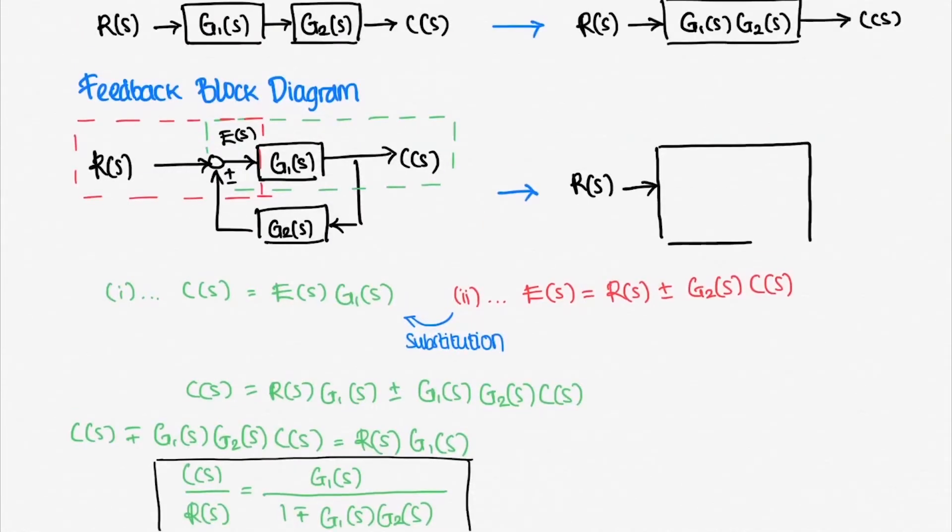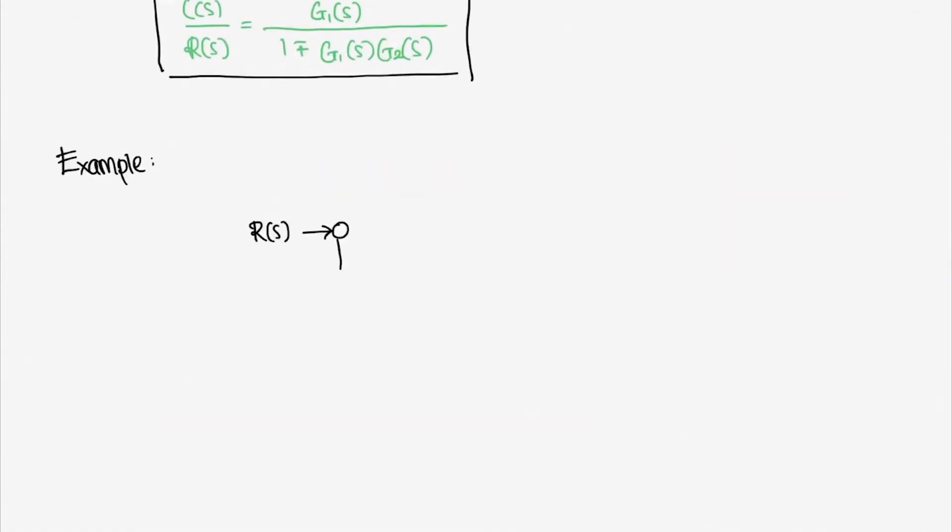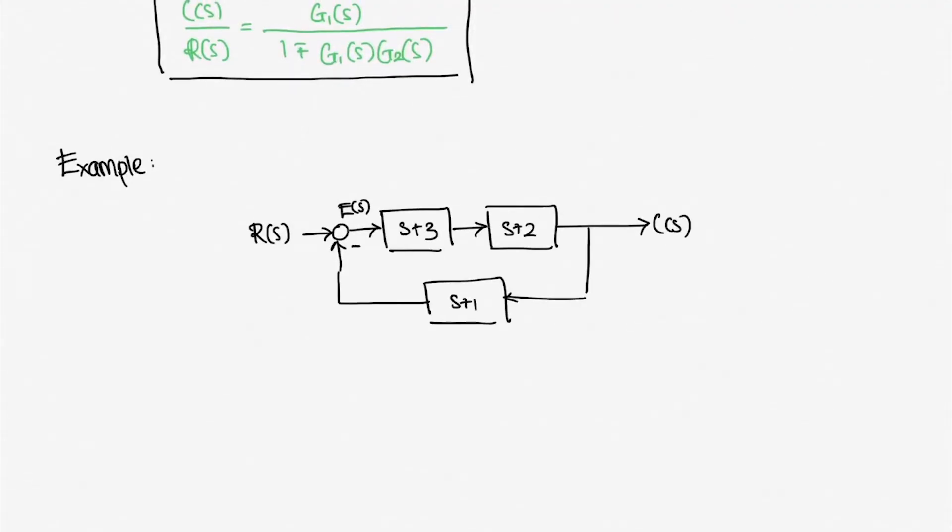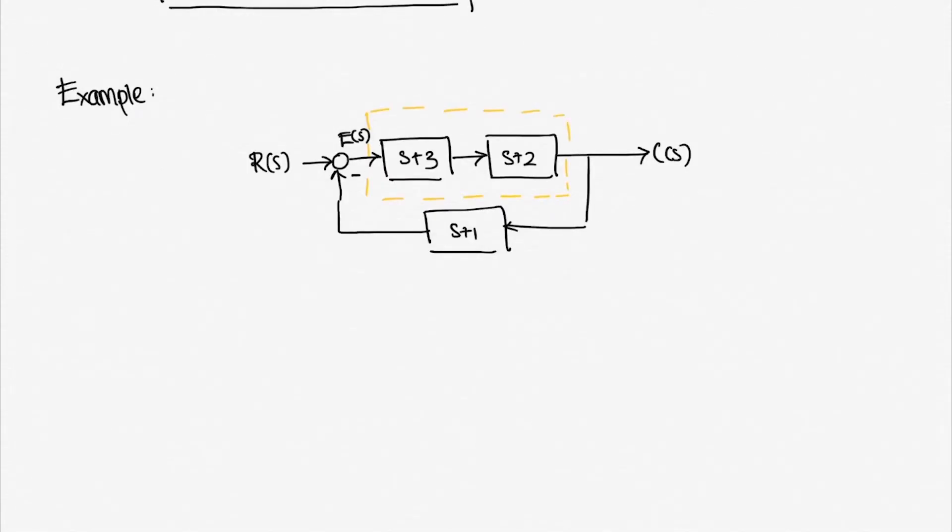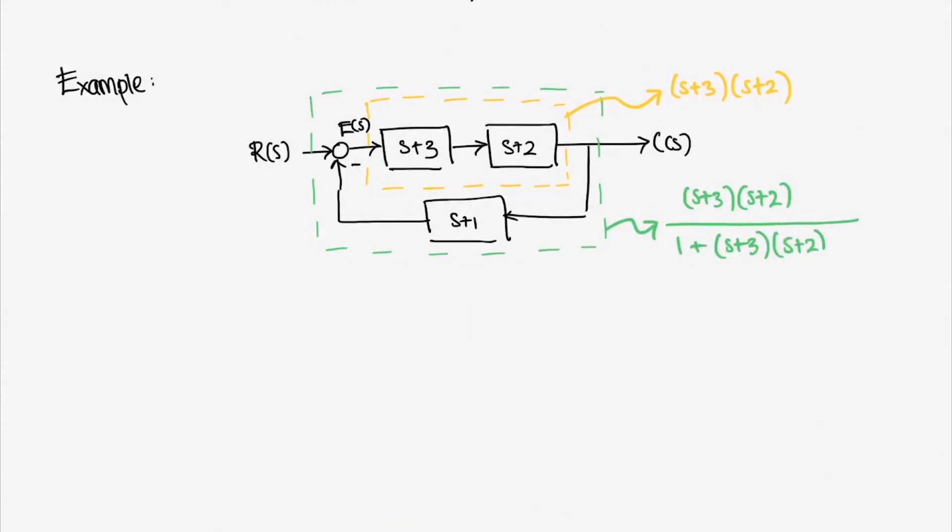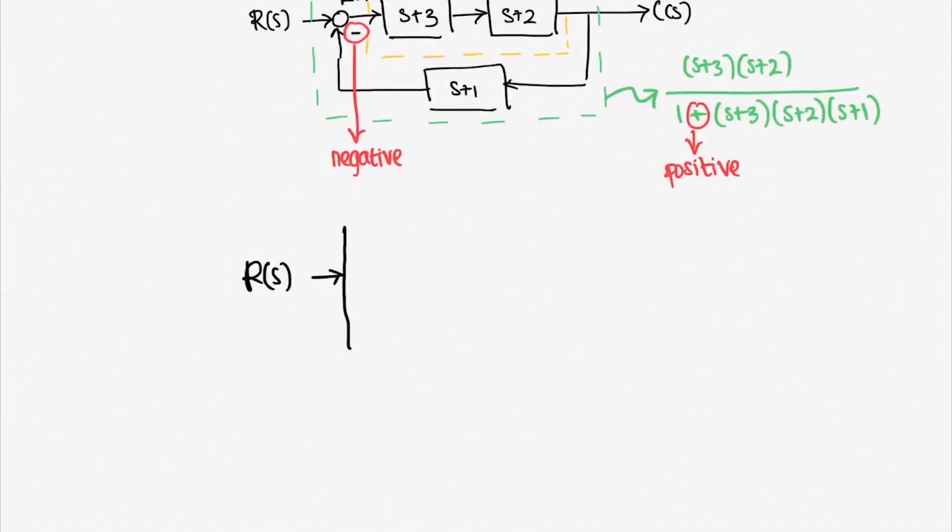Let's use an example. There are two parts in this block diagram: the cascaded part and then the feedback part. Let's simplify the cascaded part first. It's simply multiplication, so it becomes (s+3) times (s+2). Next, let's simplify the feedback part. Using our previous formula, obviously we get (s+3)(s+2) over 1 plus (s+3)(s+2)(s+1). Note that the feedback is negative, so we use 1 plus. That's it. That was block diagram reduction.